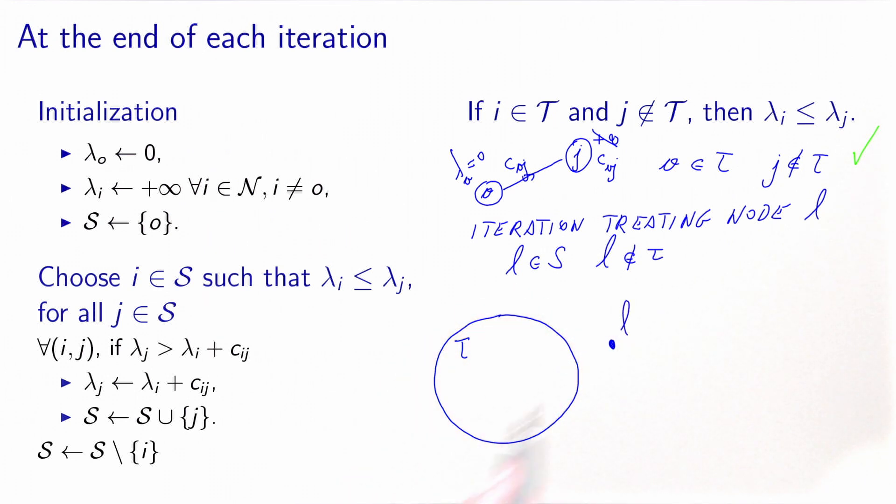One is that one arc goes to a node M, which is inside T, during the iteration. In that case, we know that lambda M is less or equal to lambda L because of this property, by induction. Now what is the algorithm doing? It's checking that lambda M is less or equal to lambda L plus C_LM. And because the cost is non-negative, this is verified. It means that during one iteration, no node in T will be updated because this condition will always be verified. And this is actually the next property that we will see in the next slide.